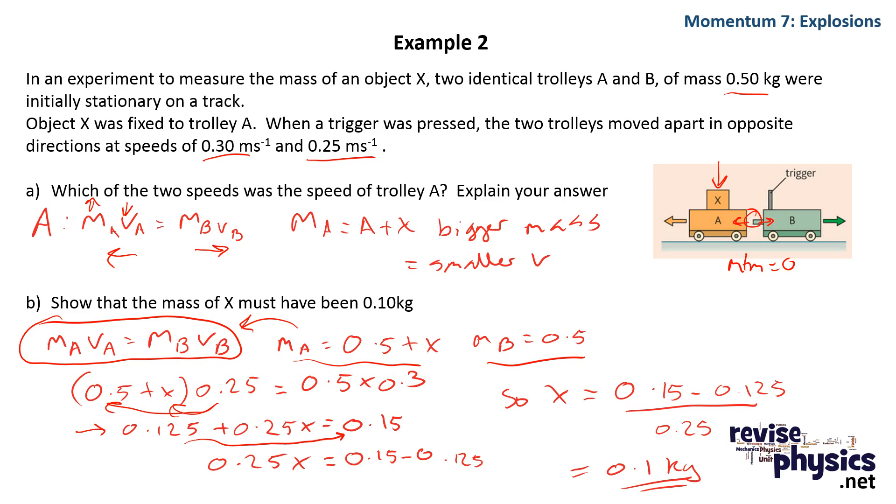And that proves that x has to be 0.1 kilograms. So by looking at the initial momentum being 0, conservation of momentum, meaning momentum that way has to equal momentum that way, and substituting in our values, we can get our mass for x.